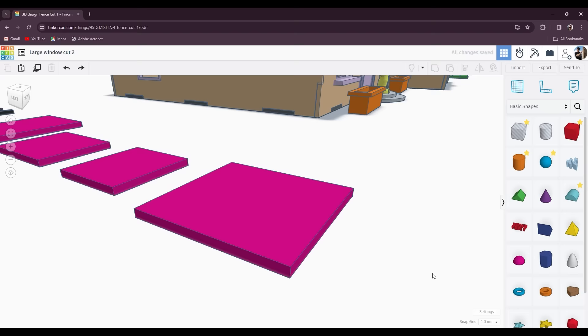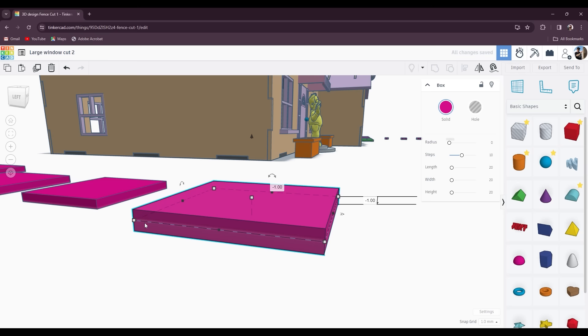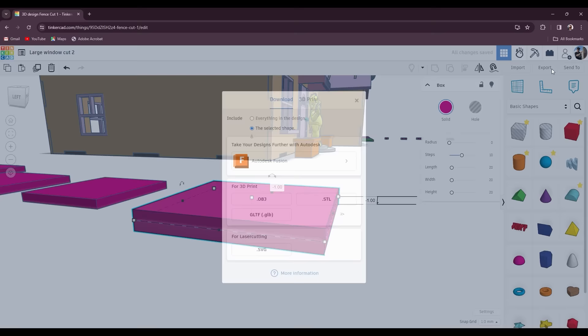To export an SVG file in Tinkercad you want the part to intersect the floor plane. Then with the part you want selected you can click export and then export as an SVG.